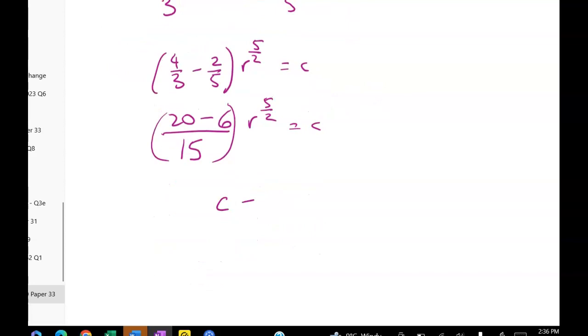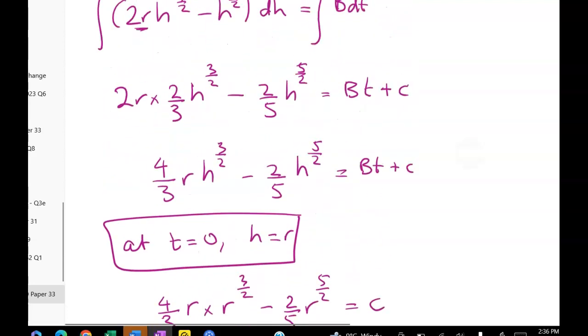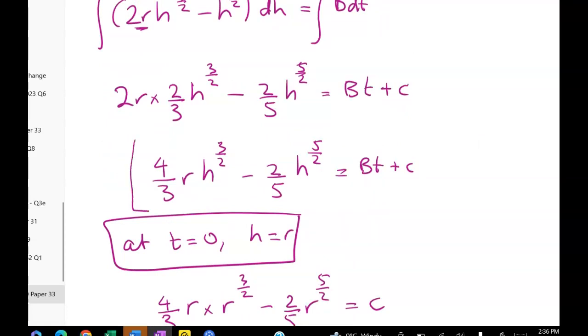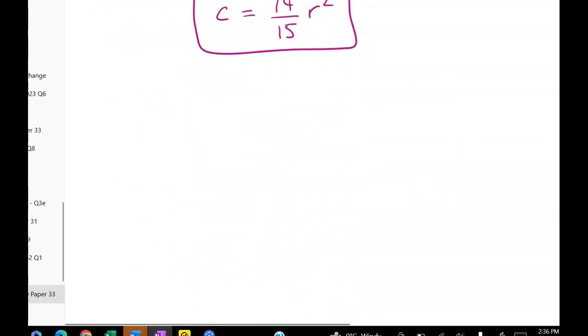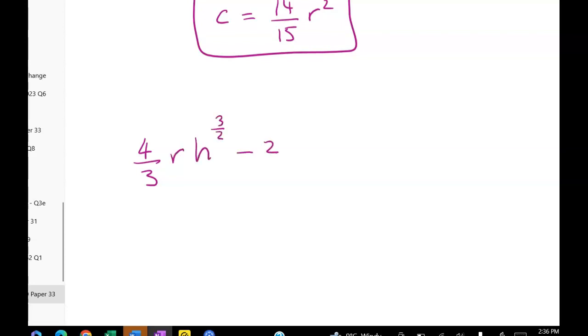So the constant's pretty yuck. The constant is 14 fifteenths of R to the five over two. Let's pop that back into where we got to. So we're here. This is where we are. And we've got that now. We've got C. So let's just write that out. We've got four thirds R H to the three over two minus two fifths H to the five over two equals BT plus 14 fifteenths R to the five over two.